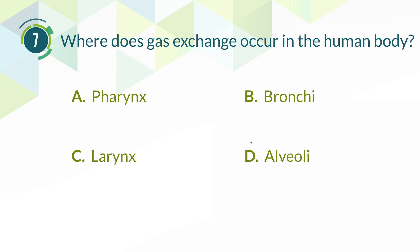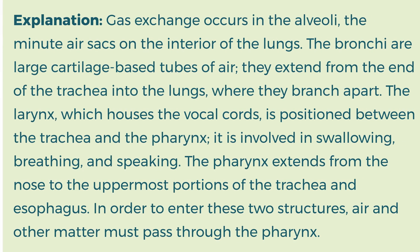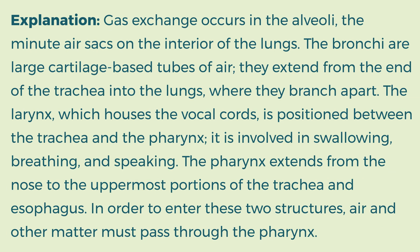The correct answer is D. Alveoli. Explanation: Gas exchange occurs in the alveoli, the minute air sacs on the interior of the lungs. The bronchi are large cartilage-based tubes of air; they extend from the end of the trachea into the lungs, where they branch apart. The larynx, which houses the vocal cords, is positioned between the trachea and the pharynx; it is involved in swallowing, breathing, and speaking. The pharynx extends from the nose to the uppermost portions of the trachea and esophagus. In order to enter these two structures, air and other matter must pass through the pharynx.